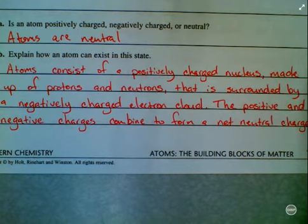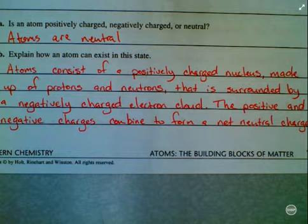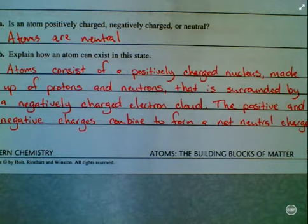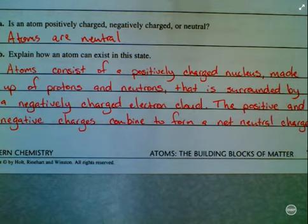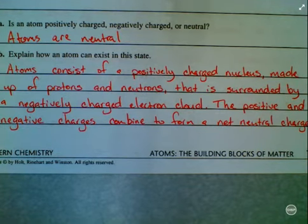B. Explain how an atom can exist in this state. Well, atoms consist of a positively charged nucleus made up of protons and neutrons, and that is surrounded by a negatively charged electron cloud. The positive and the negative charges — positive from the nucleus, negative from the electron cloud —